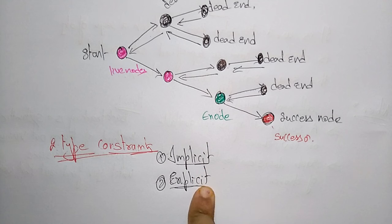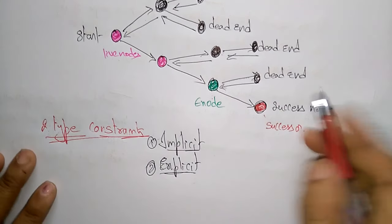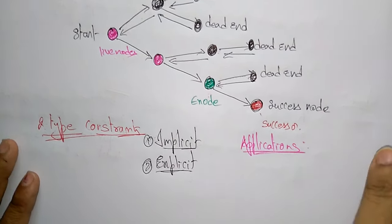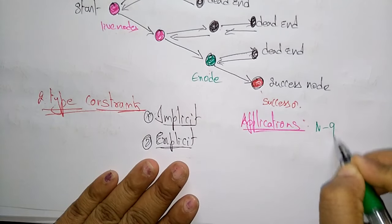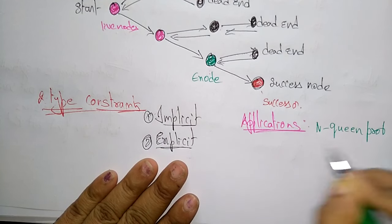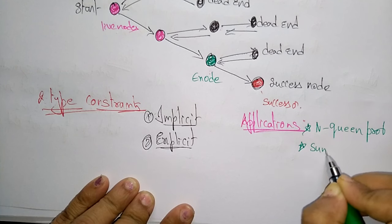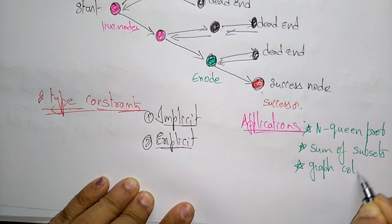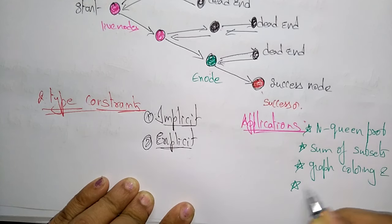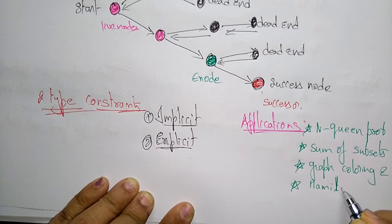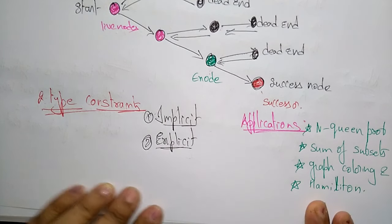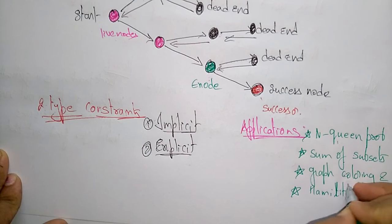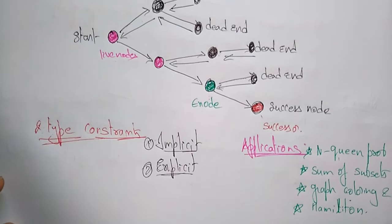The applications of backtracking are: the N-queens problem, sum of subsets, graph coloring, and the Hamiltonian cycle problem. These are the four main applications that use the backtracking technique. We will discuss each application one by one with an example and an algorithm in the coming videos. Thank you.